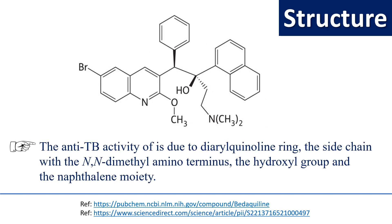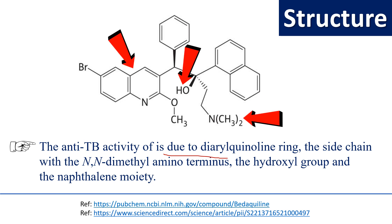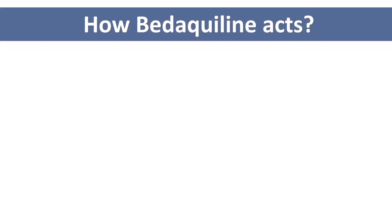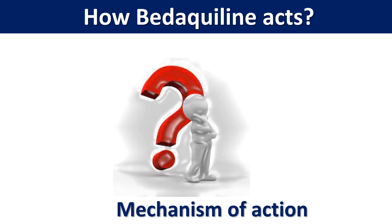Further examination of the structure reveals that the anti-TB activity of Bedaquiline is due to the diarylquinoline ring, the side chain with N,N-dimethylaminoterminus, the hydroxyl group, and the naphthalene moiety. These four features are very important for Bedaquiline to act as an anti-tubercular drug.